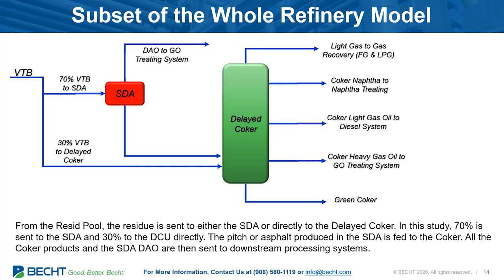With that said, we simulated a solvent de-asphalting unit and a delayed coker in the context of a whole refinery model. In the simulation — and these are variables that can be adjusted — we took 70% of all vacuum tower bottoms and sent it to the SDA unit, with 30% going directly to the delayed coker. In this model we have a relatively small delayed coker — a two-drum coker — that can't handle significantly more feed. We did not change the feed to the refinery; it was kept fixed. But later you'll see how it could be possible to increase the crude rate or change crude types. The simulation was strictly looking at a 70/30 split in the VTBs and different lifts for the solvent de-asphalting and how they affect the different products.